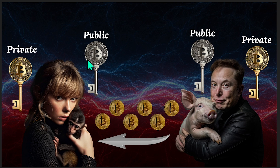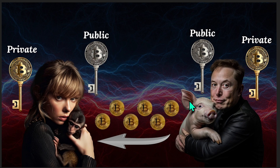So how is the transaction of Elon Musk sending five Bitcoin to Taylor Swift completed? Well, Elon is going to enter Taylor's public key — that is her Bitcoin wallet address — as the recipient in his wallet, and he's going to specify the amount of Bitcoin he wants to send, which in this example is five Bitcoin.